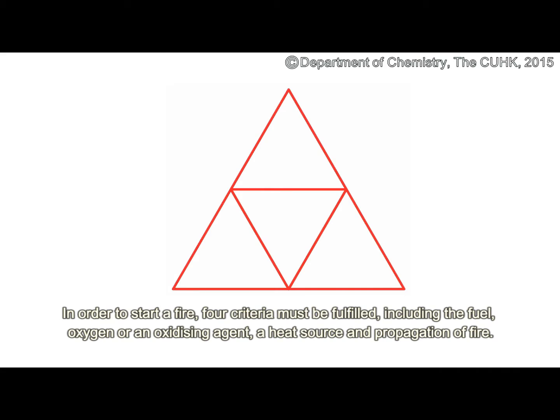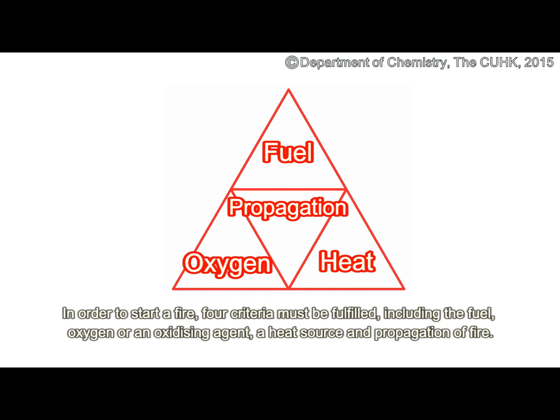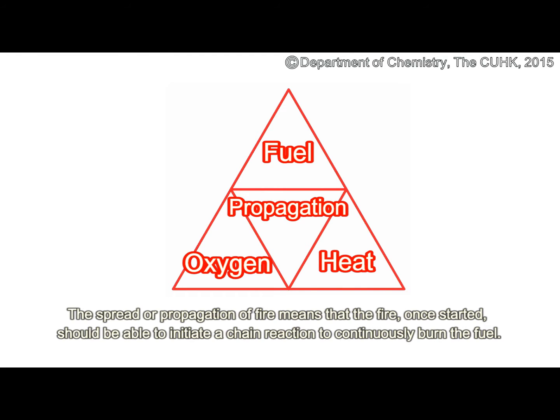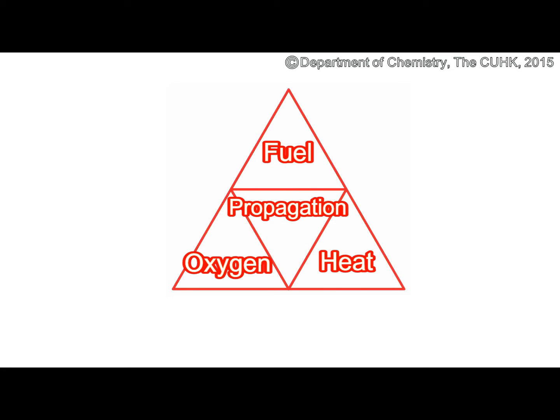In order to start a fire, four criteria must be fulfilled: the fuel, oxygen or an oxidizing agent, a heat source, and propagation of fire. The spread or propagation of fire means that the fire, once started, should be able to initiate a chain reaction to continuously burn the fuel. This is illustrated as the fire tetrahedron.